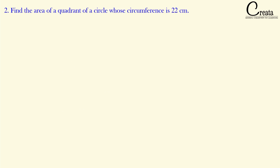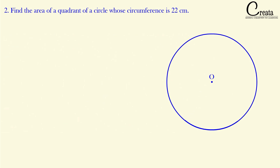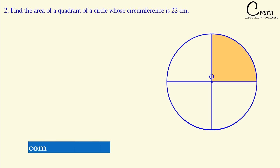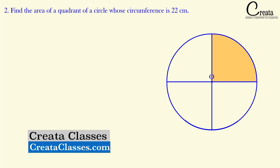Let's move to question number 2. Find the area of a quadrant of a circle whose circumference is 22 cm. In this question, we have to find the area of a quadrant of a circle. The circle is basically divided into 4 quadrants and we have to find the area of any one quadrant — all quadrants are equal. The complete angle of a circle is 360 degrees and we have 4 quadrants, so each angle is 90 degrees.